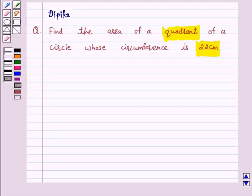Hello and welcome to the session. I am Deepika here. Let's discuss a question which says find the area of a quadrant of a circle whose circumference is 22 cm.